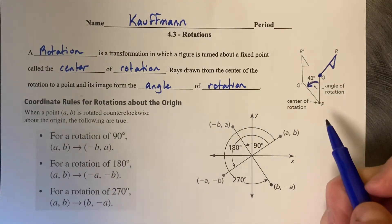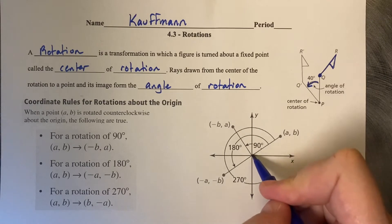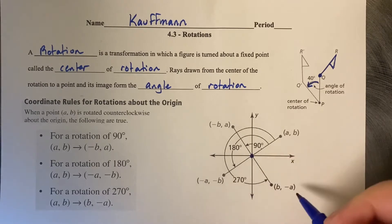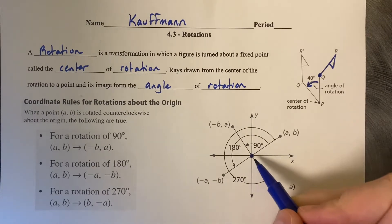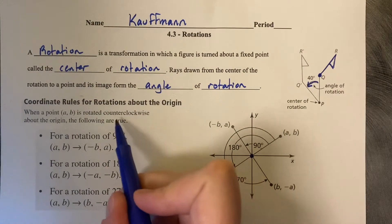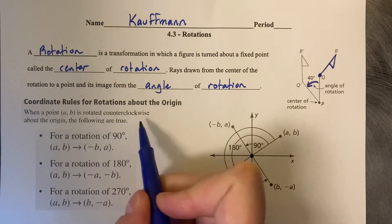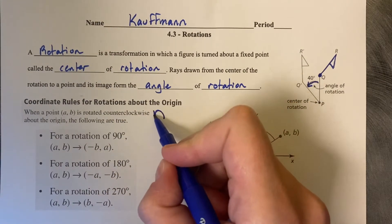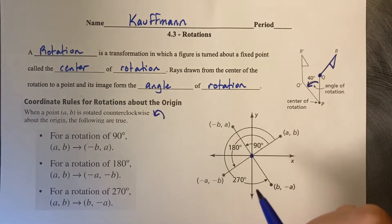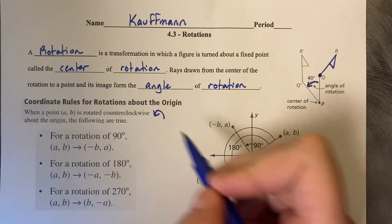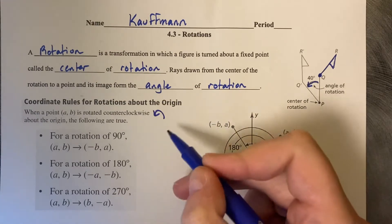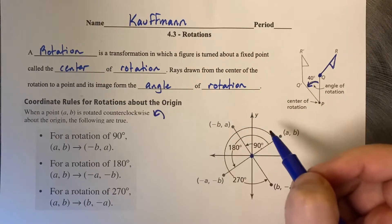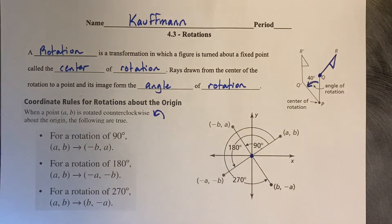In this class, we're mostly going to be rotating about the origin, which is the (0, 0) point on a coordinate plane. And we're going to be rotating counterclockwise, which is up and to the left — opposite of clockwise, going up and to the left around the origin.